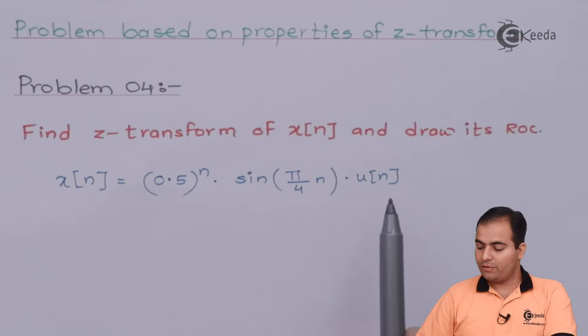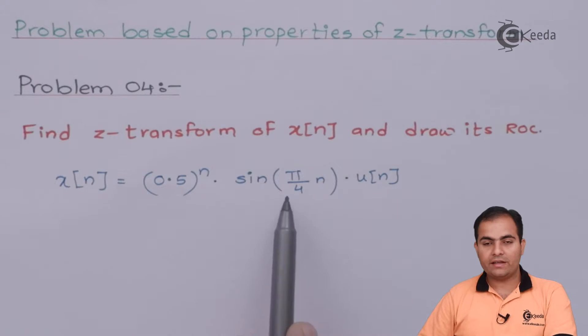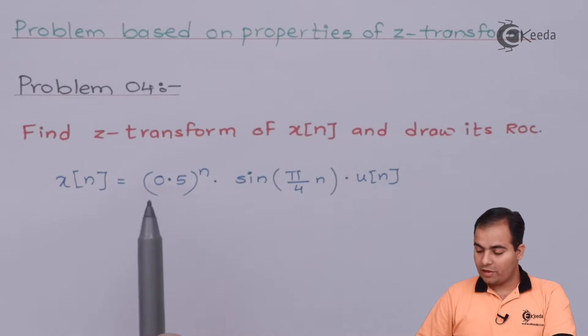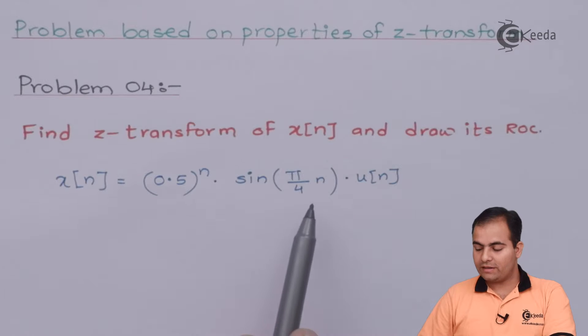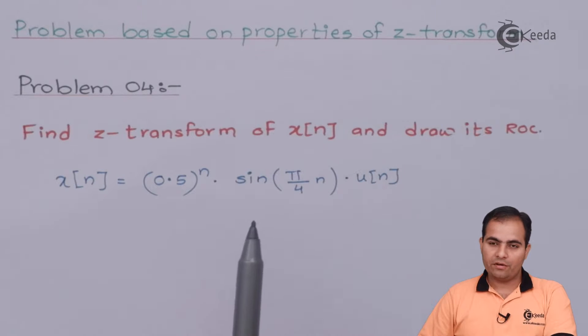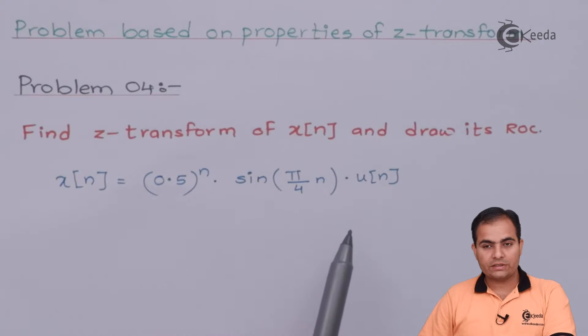So ROC problem is solved, only thing is we have to apply Z-transform on the sinusoidal wave and then later on use time scaling property. If you have derived or know the Z-transform sin(π/4 · n) then it is good. If not, then solve the whole question and then substitute (0.5)^n.